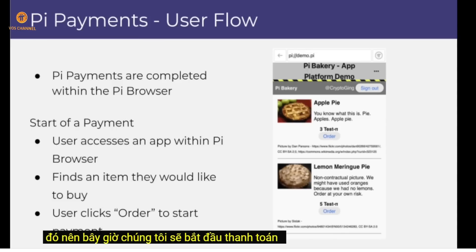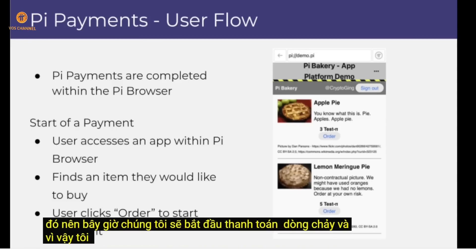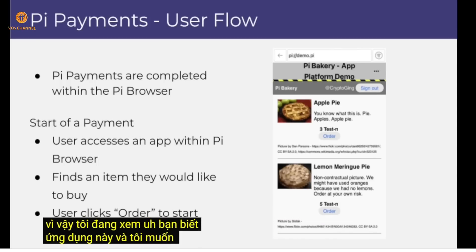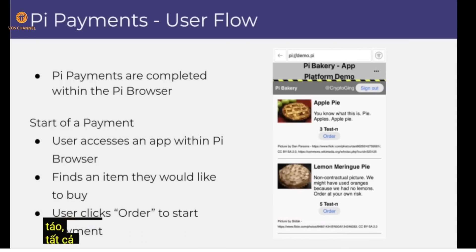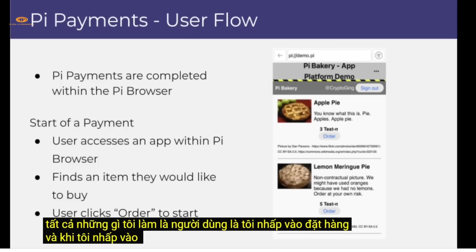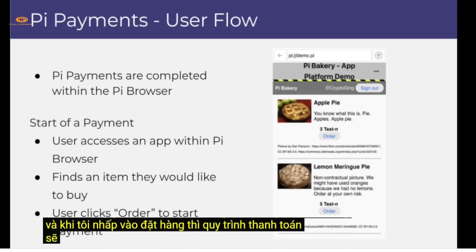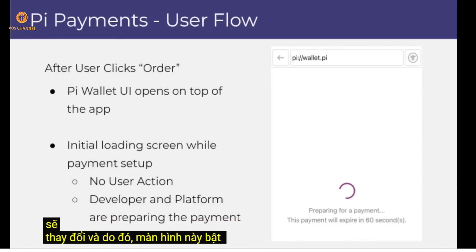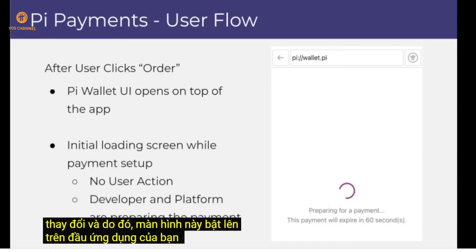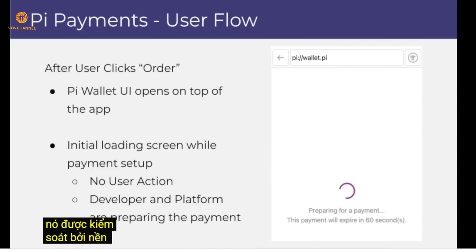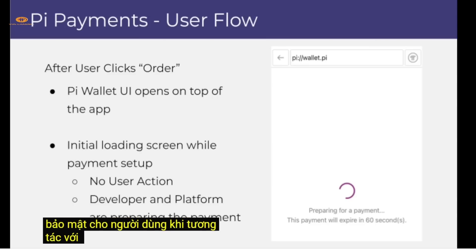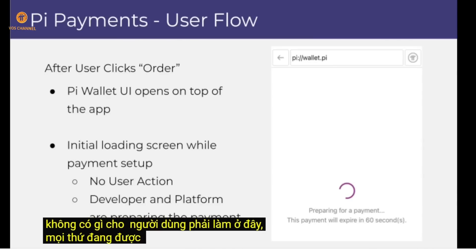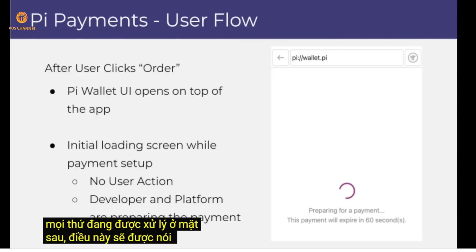Now we'll begin the payment flow. As the user, I see the application and I want to buy an apple pie. I click 'Order' and the payment flow screen pops up over top of your application — this is the Pi wallet payment flow, controlled by the Pi platform, which provides security for the user when interacting with applications. This is an initial loading screen while everything is being handled on the back end.